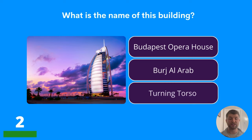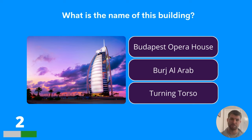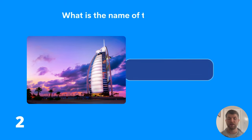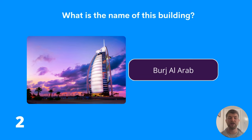Question two: what is the name of this building? Is it the Budapest Opera House, the Burj Al Arab, or the Turning Torso? The answer is the Burj Al Arab.